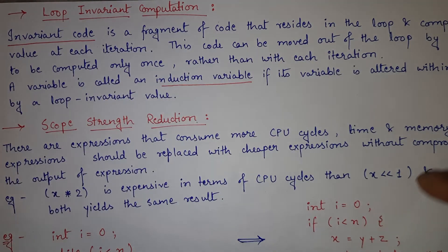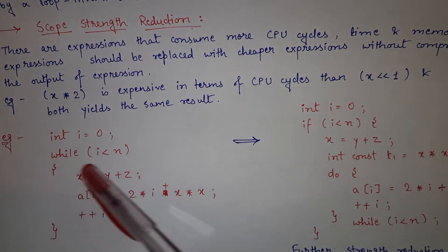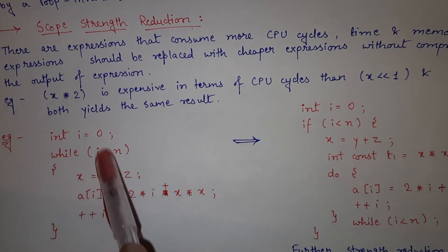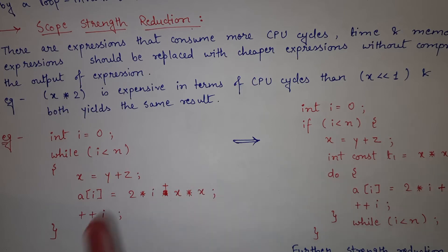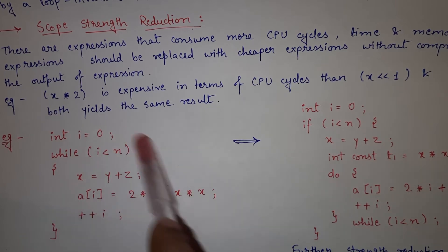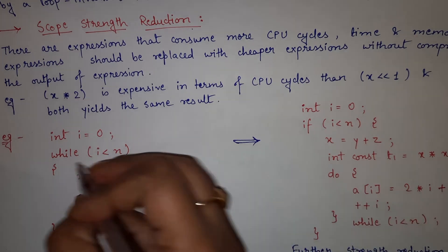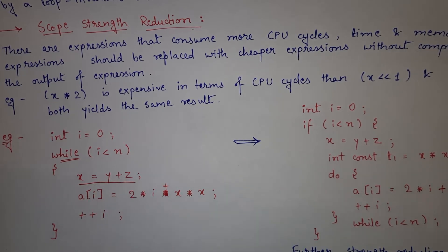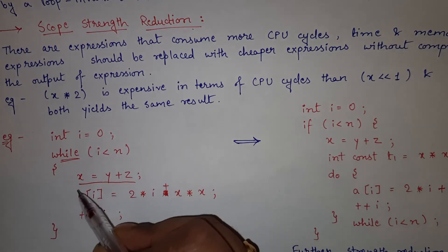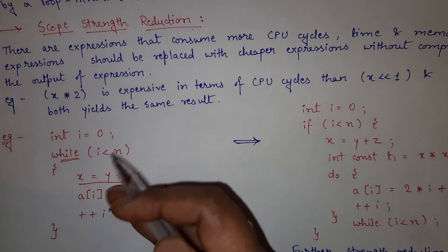Now let's see the example of loop invariant computation. Here we have one integer i = 0, a while loop while i < n, then x = y + z, A[i] = 2 * i + x * x, and then i++. We want to perform loop invariant computation to optimize this code. Inside the loop, x = y + z is a constant expression because the values of y and z are not changing. So instead of writing this expression inside the while loop, we can take it outside.